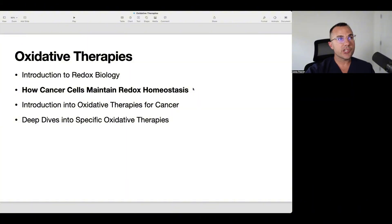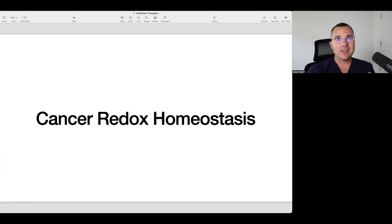So we're in section two of this new series on oxidative therapies. As I said in the last video, we looked at an introduction into redox biology. Today we're going to be looking at how cancer cells maintain redox homeostasis. I like to call this cancer's internal shield system that has to be broken down in order to achieve our outcomes we're looking for with metabolic therapies.